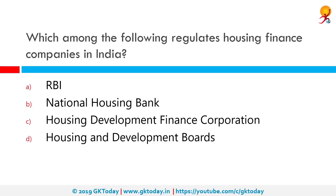Which among the following regulates housing finance companies in India? The National Housing Bank is the correct answer. It is a Government of India owned entity, set up on 9 July 1988 under the National Housing Bank Act of 1987. It is the apex financial institution for housing.